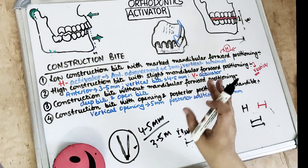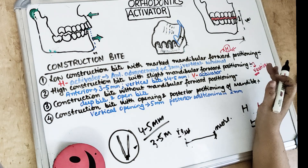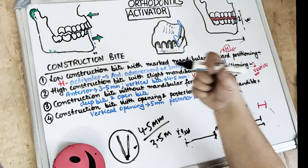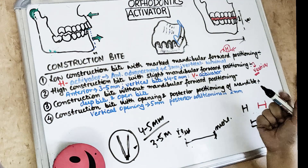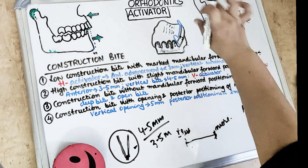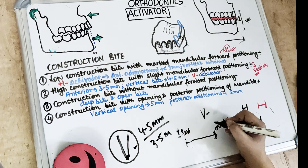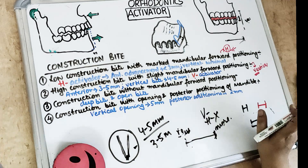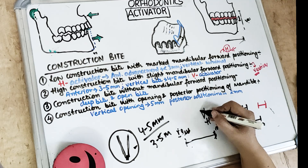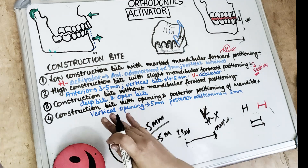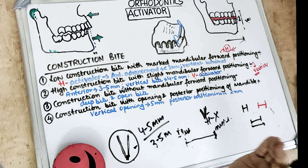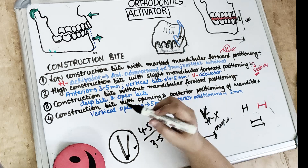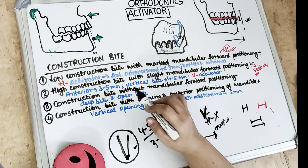The third type is construction bite without mandibular forward positioning — we give a construction bite but do not forward the mandible. There is only a vertical increase with no anterior advancement. This is used in cases of deep bite or open bite Class 1 malocclusion, as covered in the indications in the previous video.